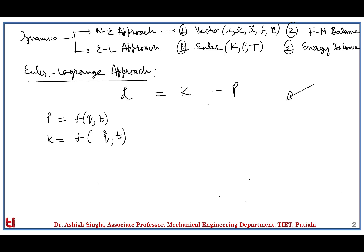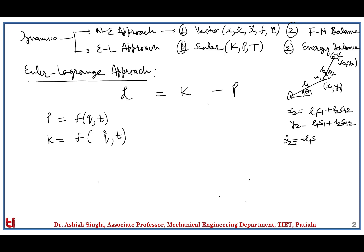Consider a two-link manipulator with joint angles theta_1, theta_2, link lengths l1, l2, and masses m1, m2. The coordinates of the tip are x2, y2, where x2 = l1·cos(theta_1) + l2·cos(theta_1 + theta_2) and y2 = l1·sin(theta_1) + l2·sin(theta_1 + theta_2). Taking their derivatives: x2_dot = −l1·s1·theta_1_dot − l2·s12·theta_12_dot, and y2_dot = l1·c1·theta_1_dot + l2·c12·theta_12_dot, where theta_12_dot = theta_1_dot + theta_2_dot.